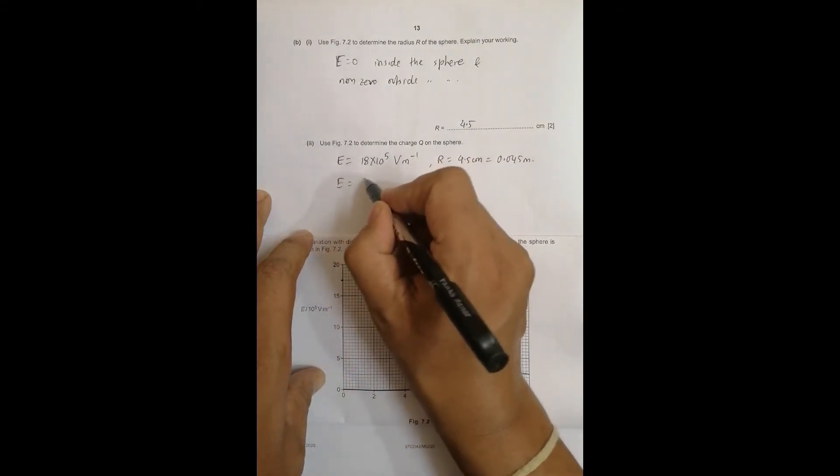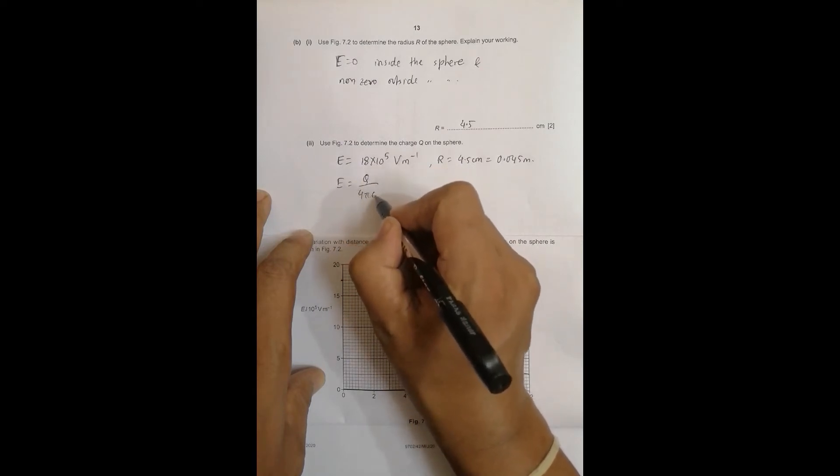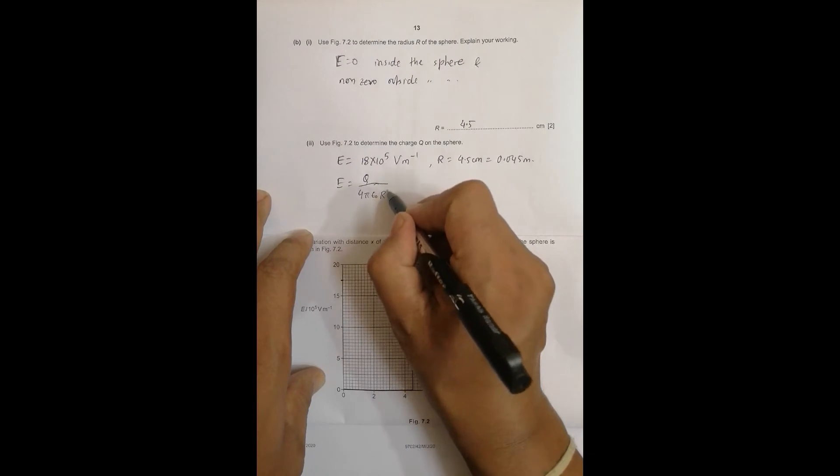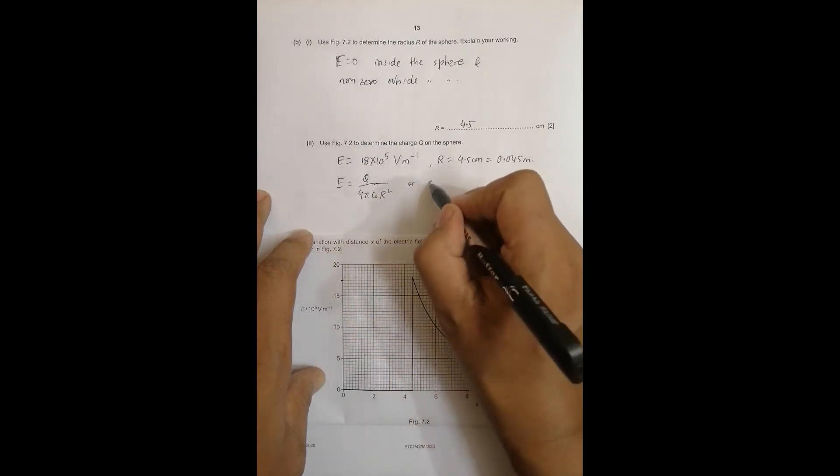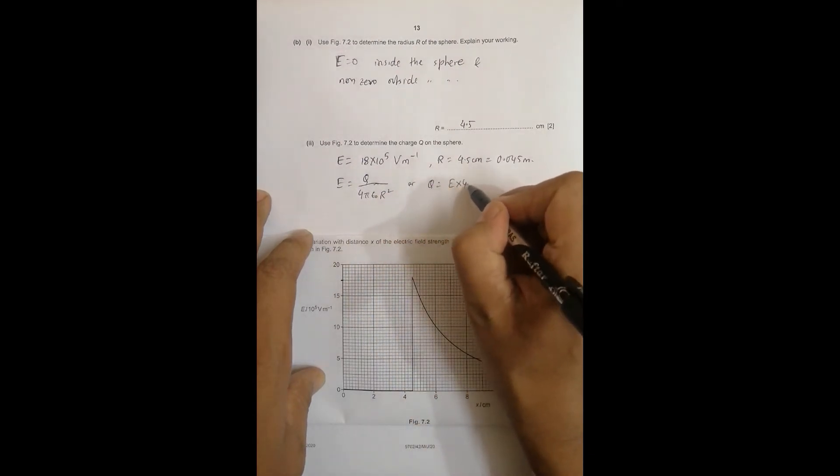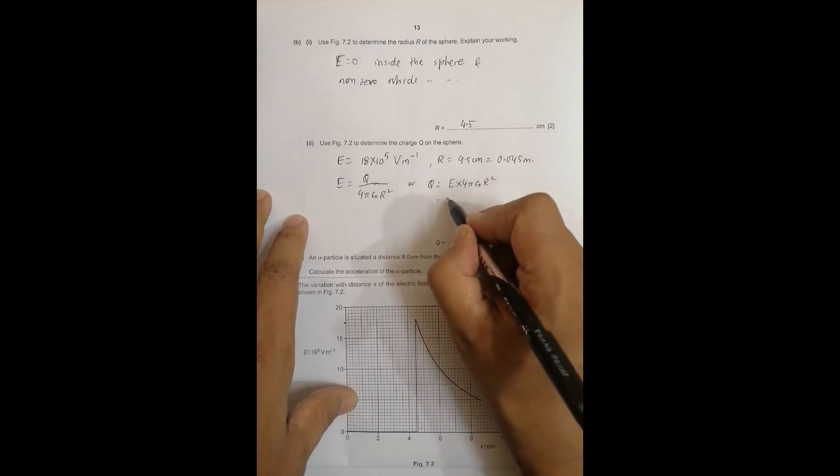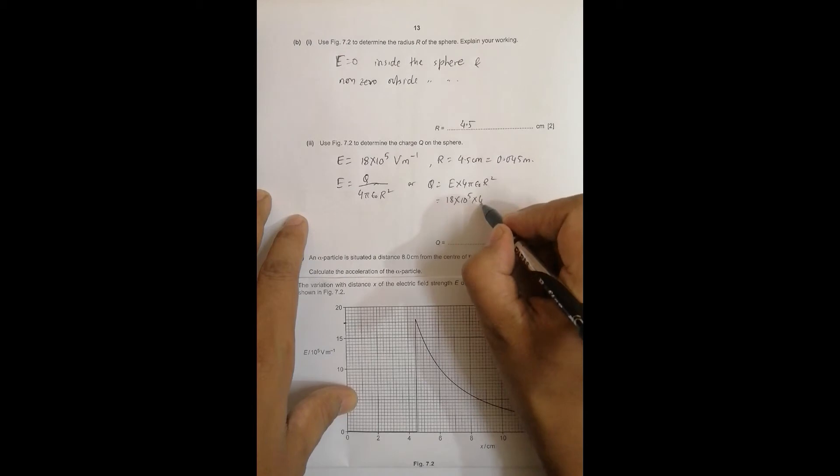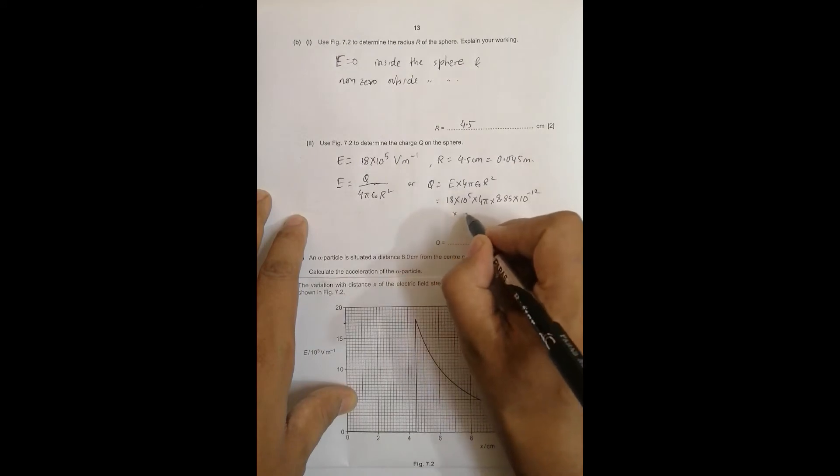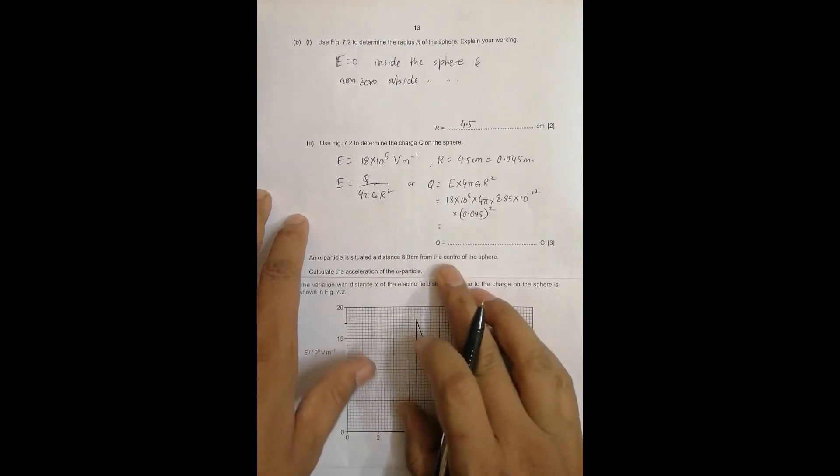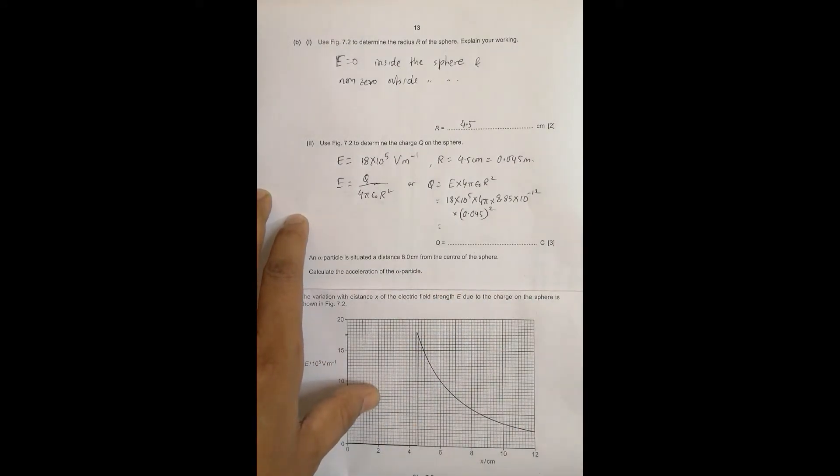We have the formula E is equal to Q by 4 pi epsilon naught assuming vacuum by r square, which gives us Q is equal to E into 4 pi epsilon naught r square. If I use the values it should be equal to 18 into 10 to the power 5 into 4 pi into 8.85 into 10 to the power minus 12 into 0.045 squared.